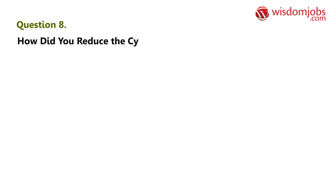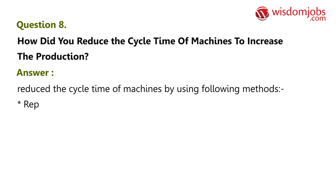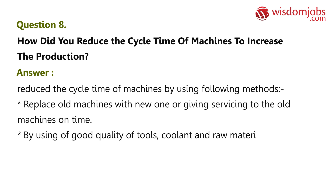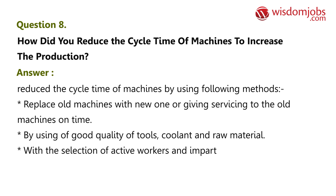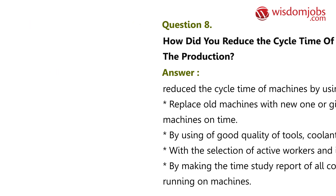Question 8: How did you reduce the cycle time of machines to increase production? We reduce cycle time by replacing old machines with new ones, by giving servicing to old machines on time, by using good quality tools, coolant, and raw material, by selecting active workers and imparting training to them, and by making the time study report of all components running on the machines.